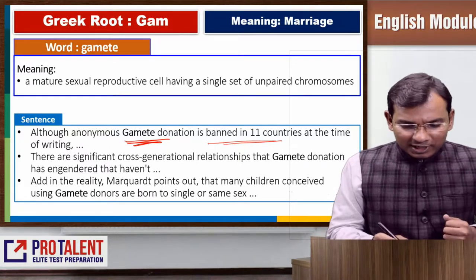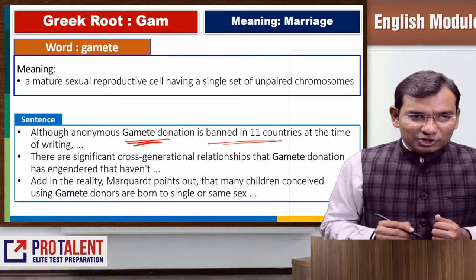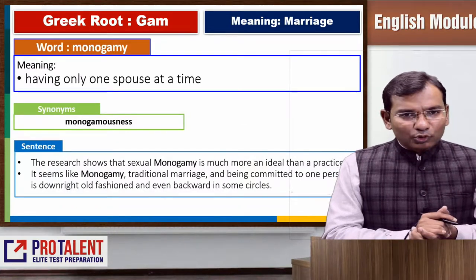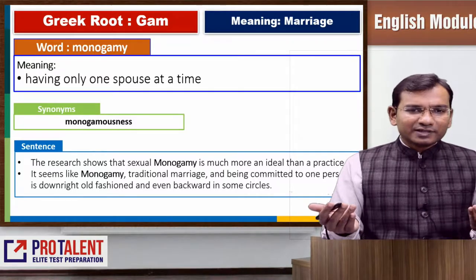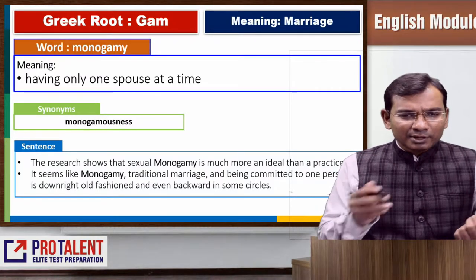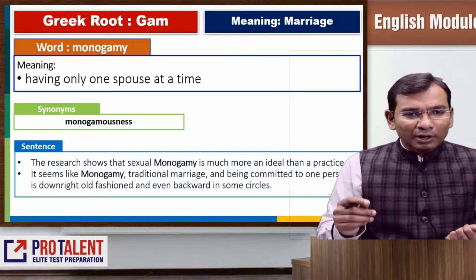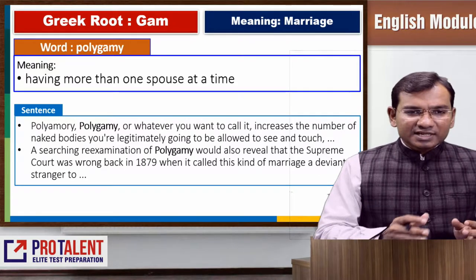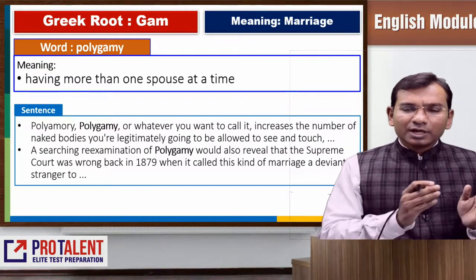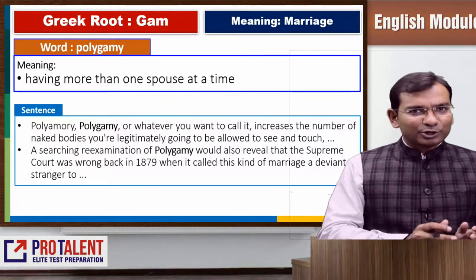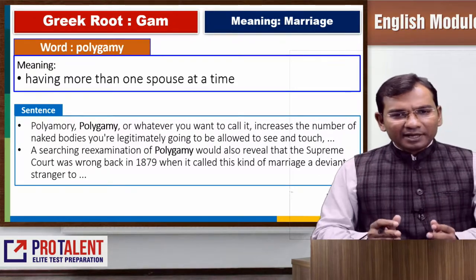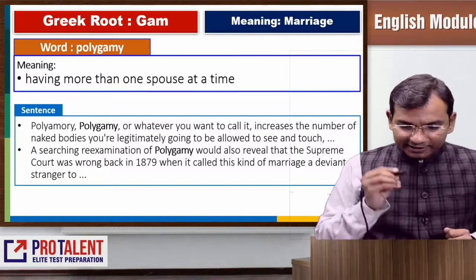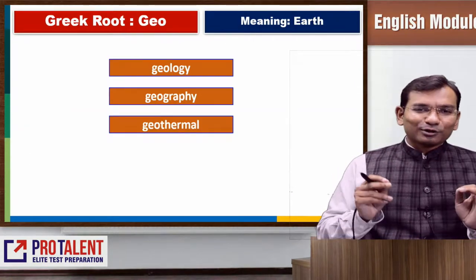Monogamy means having a single spouse at a point in time. Polygamy means having more than one spouse — many marriages at a particular point in time. That covers the root GAM. The next root is GEO.